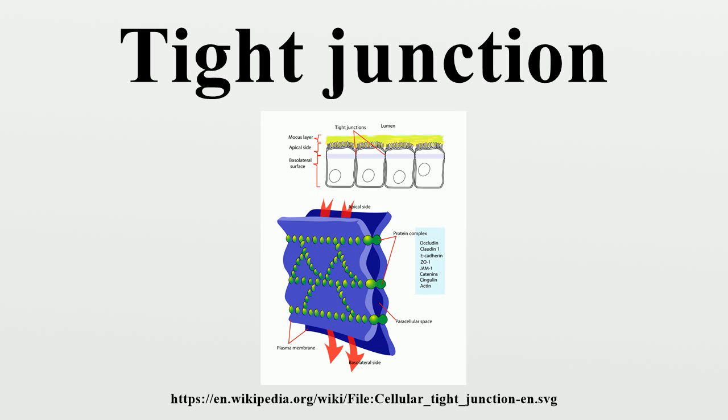These anchor the strands to the actin component of the cytoskeleton. Thus, tight junctions join together the cytoskeletons of adjacent cells.